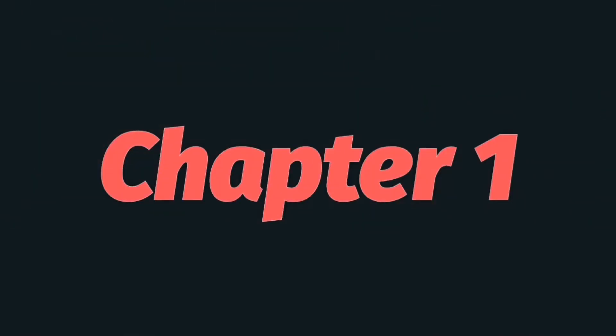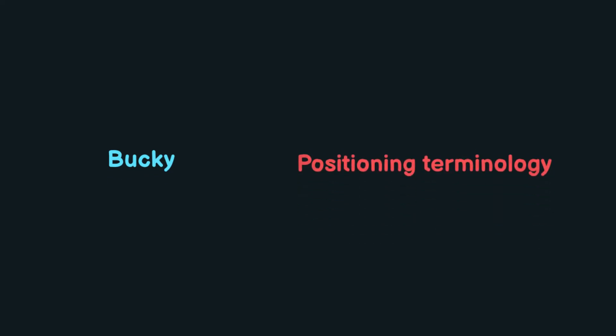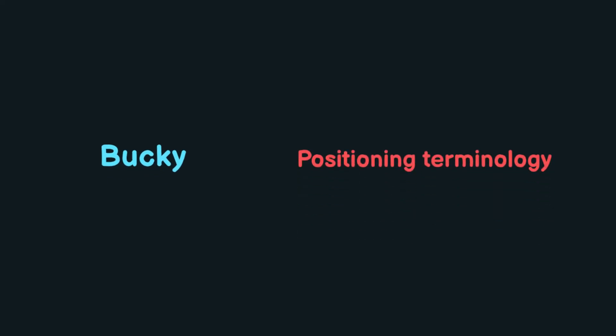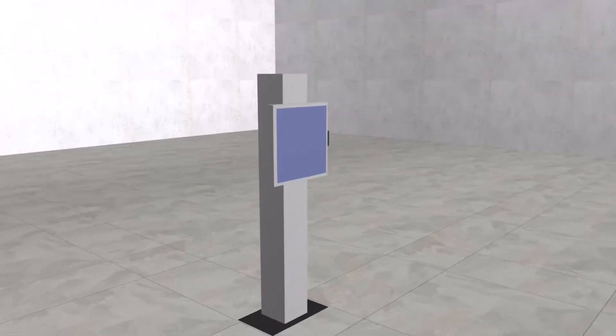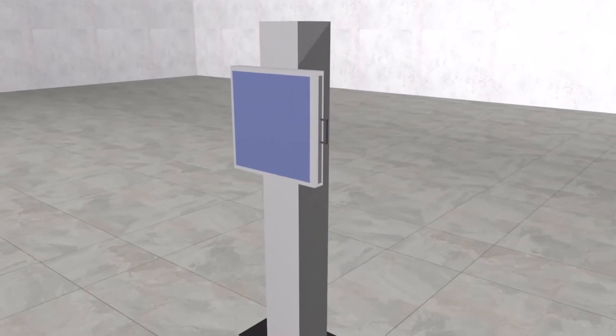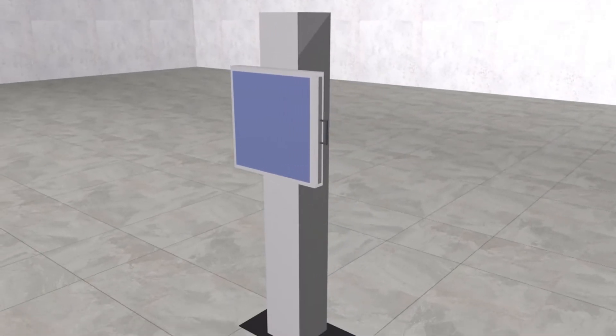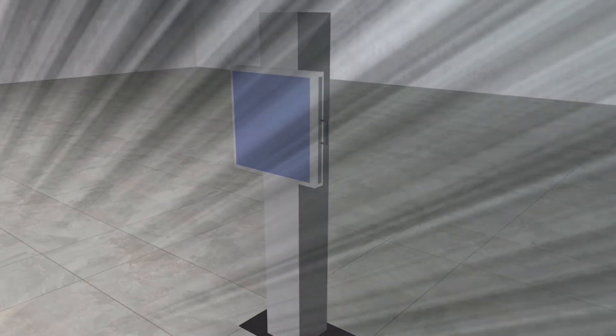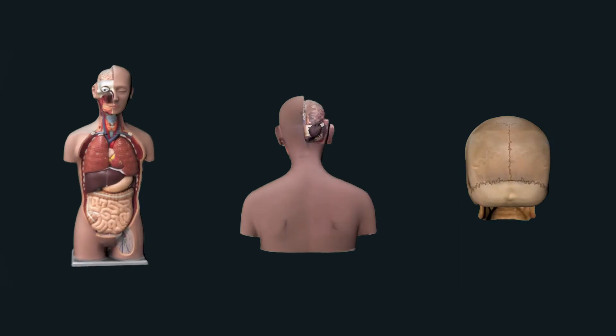Hello my friends, this is the second lesson of chapter 1. In this lesson we will talk about Bucky and positioning terminology. Bucky, in short, is a box in which the cassette is placed, and its function is to absorb excess scattered rays that cause confusion and blurring of the image.